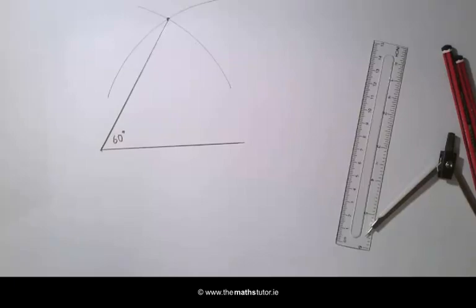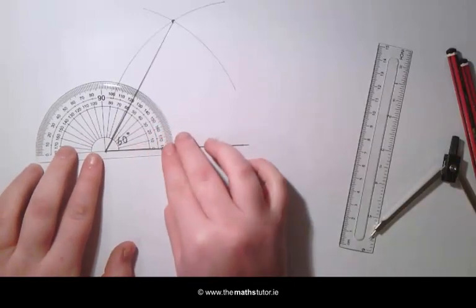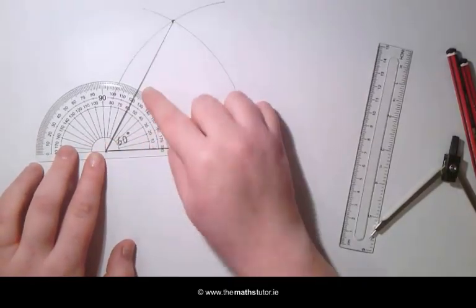If you want to make sure you are right, take a protractor and measure it. Placing our protractor we can see this is 60 degrees.